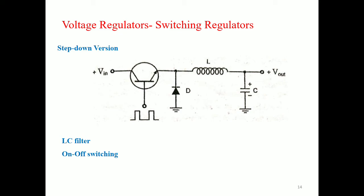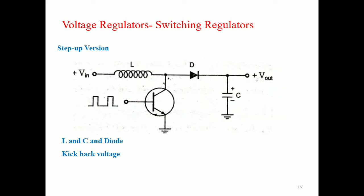The step-down switching regulator: the regulator pulses the transistor between saturation and cut-off during each cycle. A pulse signal is given to the base of the transistor, generating a rectangular voltage at the input to the LC filter. This filter blocks the AC component and allows the DC component to pass to the output. Because of the on-off switching, the average output value is always less than the input voltage — that is why it is called the step-down version.